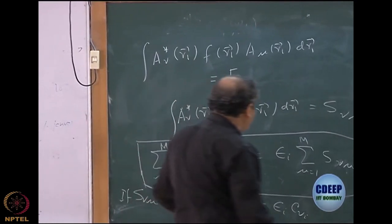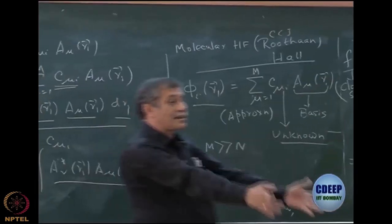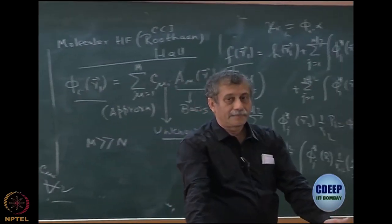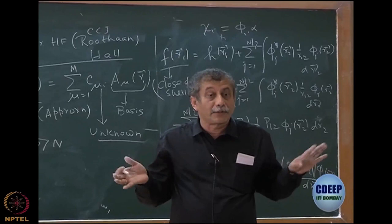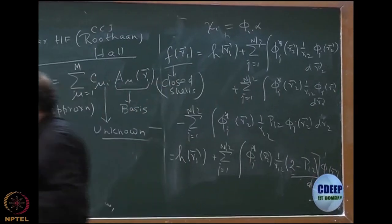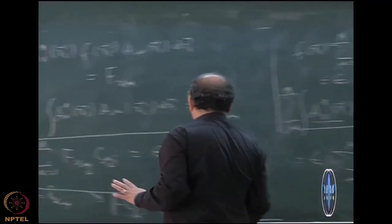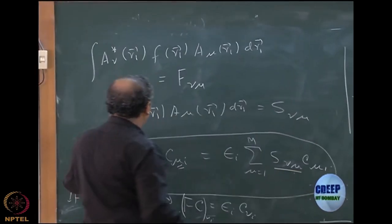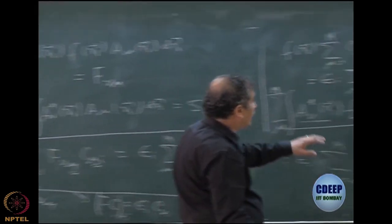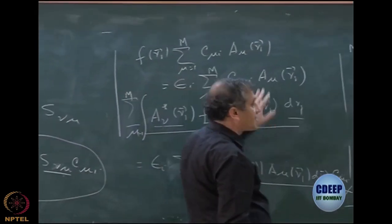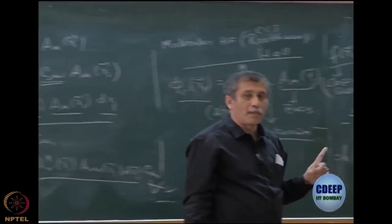So you will become epsilon I C mu I and this is nothing but an eigenvalue equation of a matrix F. So this would then become an eigenvalue equation if I can construct the matrix F, which is much easy to do because I know how to solve eigenvalue equation. However, it is not quite true because in general these need not be orthonormal.